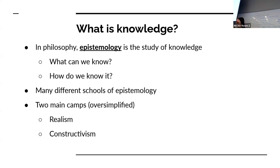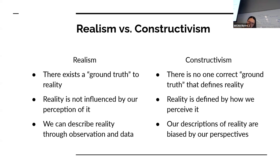The realists say there is a fundamental truth to reality and we can measure it. This came out of, for example in the West, the Enlightenment — people trying to very concretely measure reality and describe what's happening so we can better understand it. The constructivists contrast this by arguing that all reality is our perception of it. There are many different ways to look at the same reality and view it differently, knowing different things using different ways of knowing. The constructivists believe that reality is defined by how we perceive it, and the way we describe reality is biased by our perspective and all the things we've experienced before.